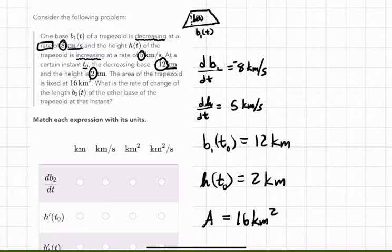What is the rate of change? I see the word rate. What is the rate of change of the length of b sub two, which is the other base? So we got the other base right here, b sub two, and that's also a function of t. It wants to know db sub two dt. What is the rate of the other base of the trapezoid at that instant?